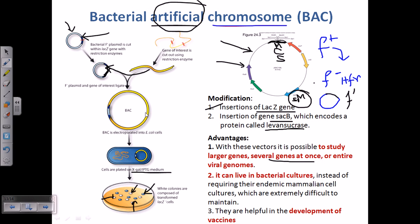Another important advantage is that BACs can be maintained in bacterial culture, rather than requiring mammalian cell lines. Maintaining cell lines is a very tedious and difficult job, whereas bacterial cultures are much easier to maintain. Therefore, using bacterial artificial chromosomes, we can culture and maintain them pretty easily.